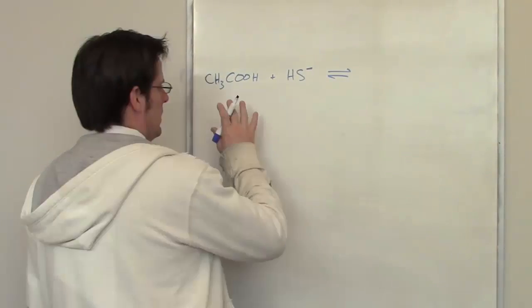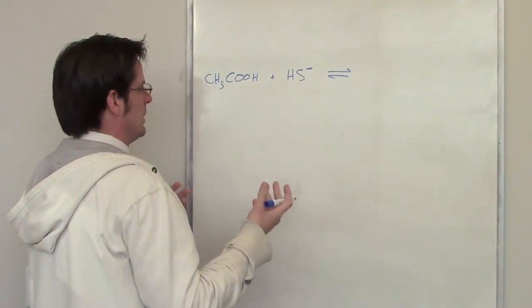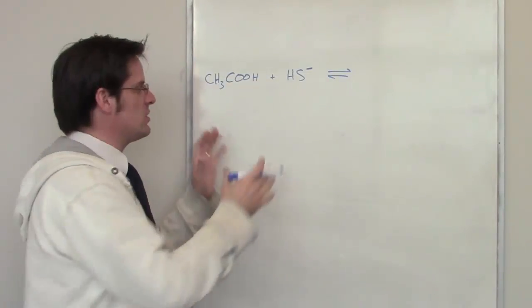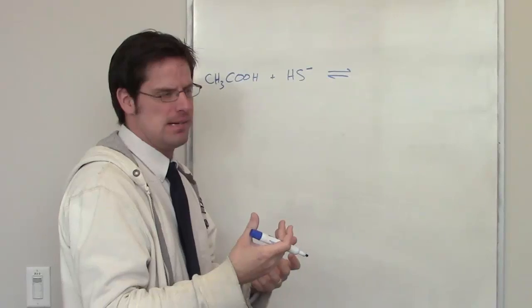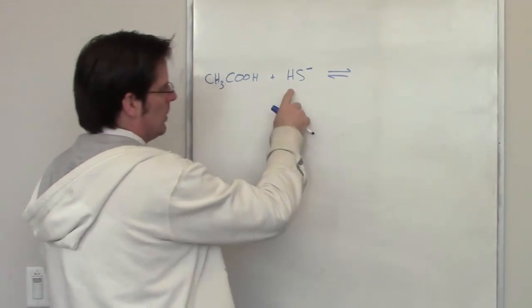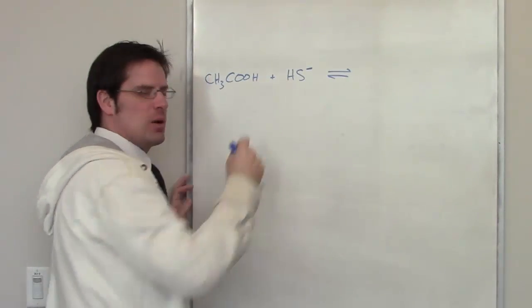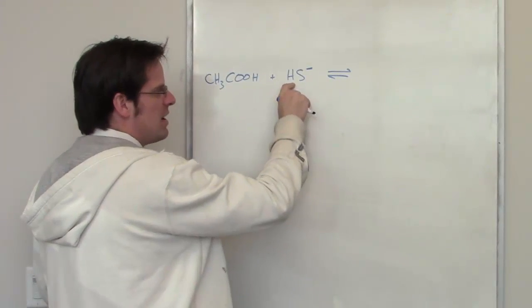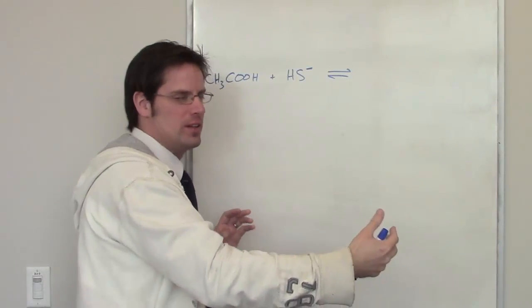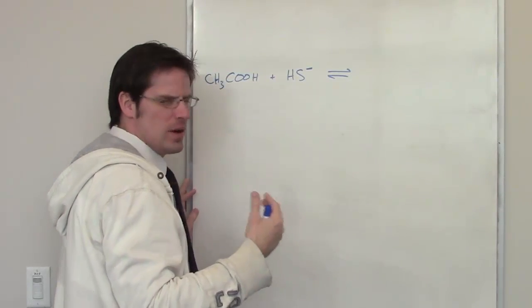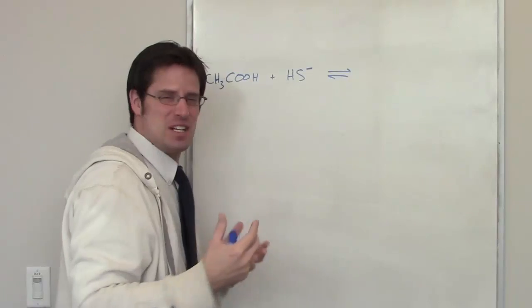We'll start with the first one, of course. This is obviously an acid-base equilibrium. We have to determine which of these two species is going to give up a proton and who's going to take a proton. Well, let's look at this one. Does this thing look like it's going to want to give up a proton? If it gave up this proton, it would now become an S2-. Does that seem like that's going to be going in a favorable direction? I kind of don't think so.